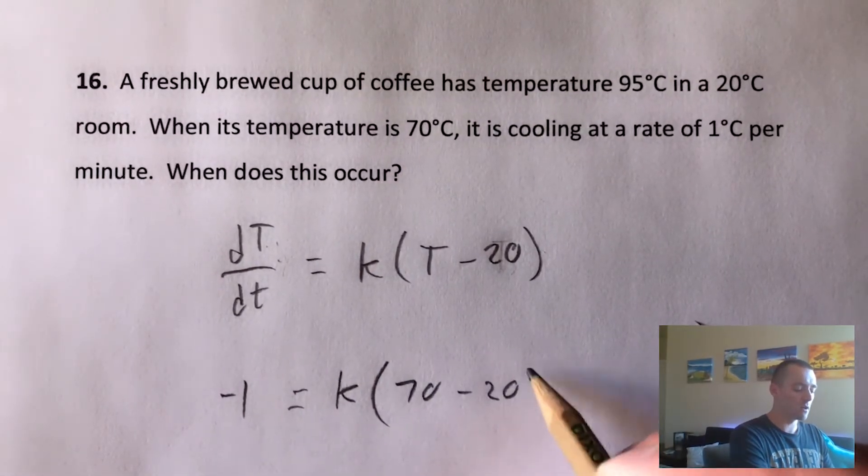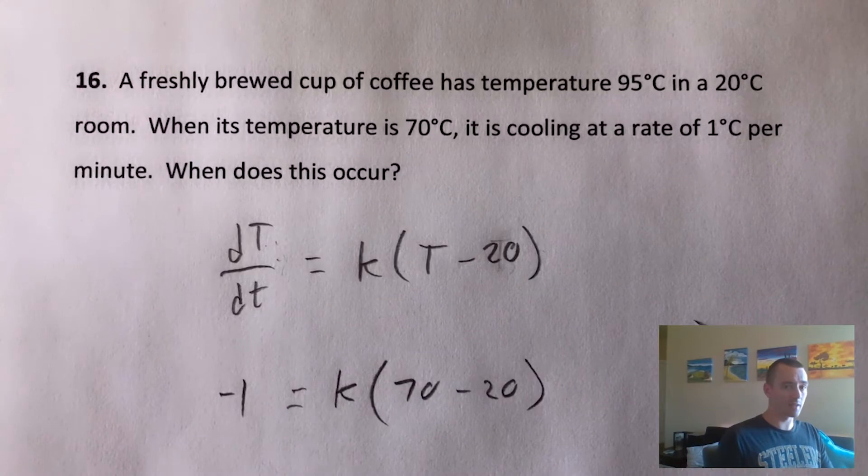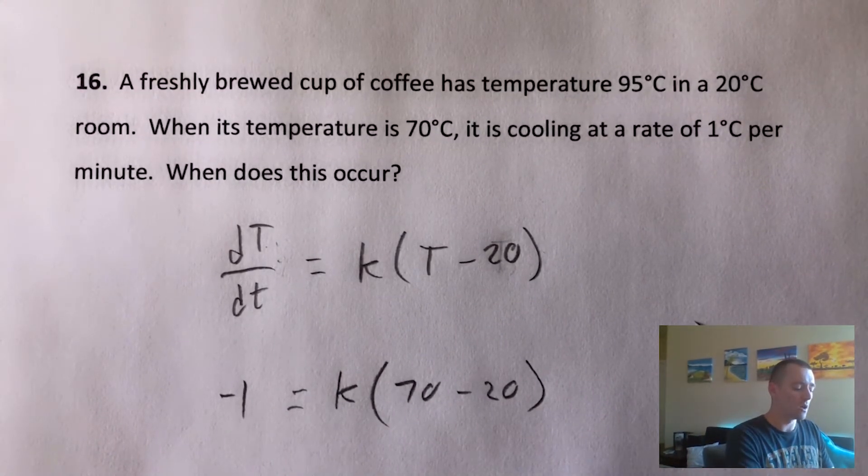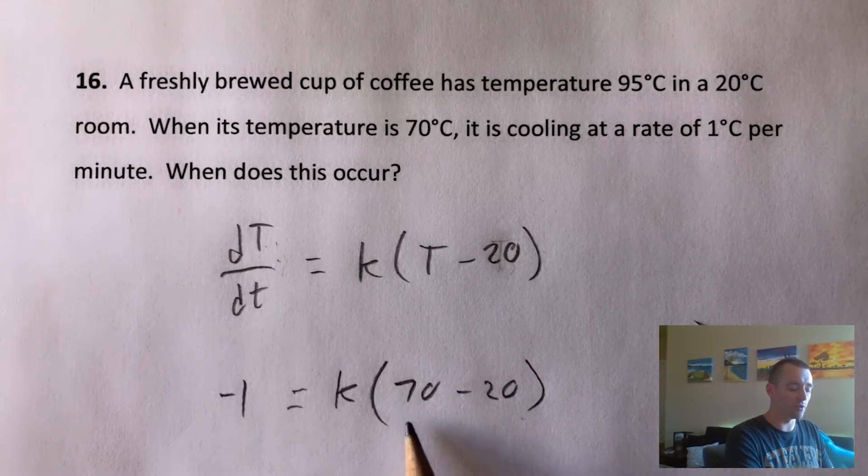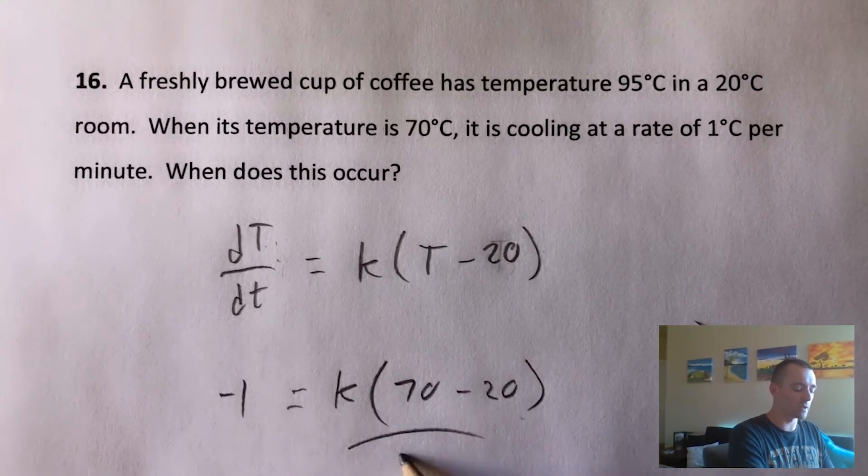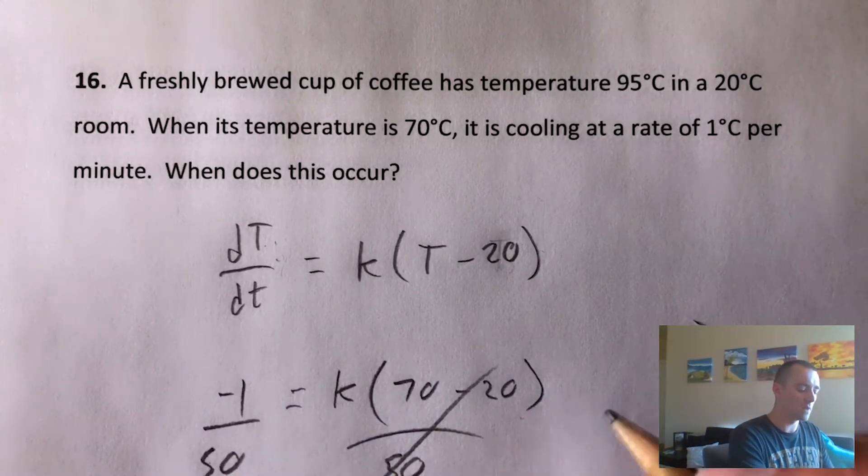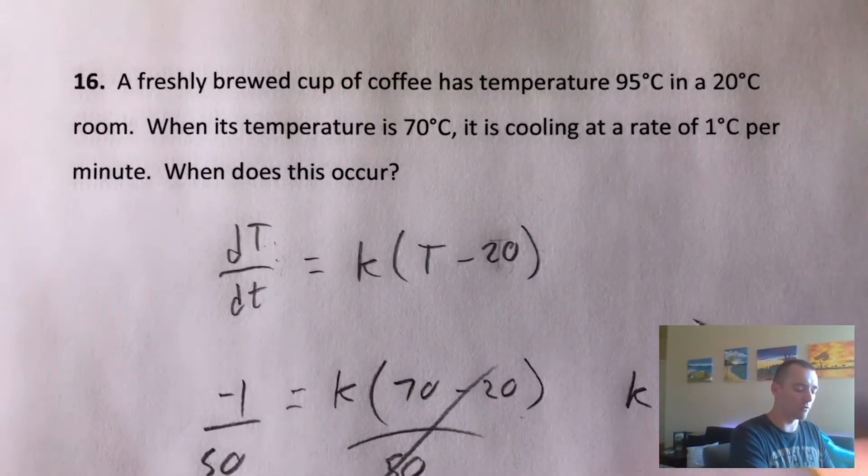Now we have this equation where K is the only unknown. So we can solve for K right off the bat. It's pretty cool. So 70 minus 20 is 50. If we divide both sides by 50, that'll cancel. So we have K equals negative one over 50.